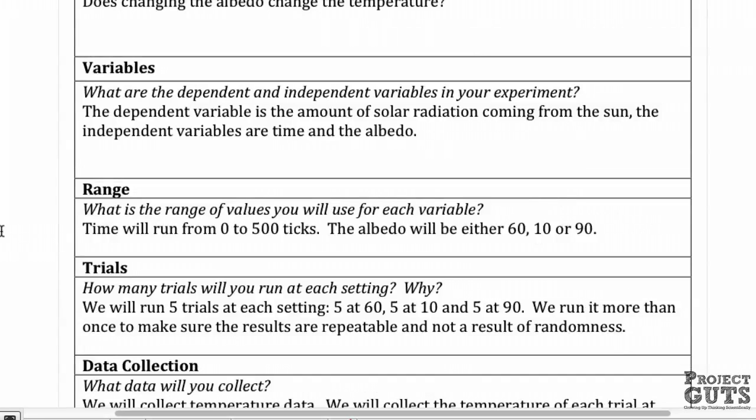You need to identify the dependent and independent variables in your experiment, so you know which variables you will be changing and which ones will stay constant. The dependent variable in this case is going to be the amount of solar radiation coming from the sun, and the independent variables will be time and the albedo. So the amount of solar radiation will remain constant, while time and albedo will change.